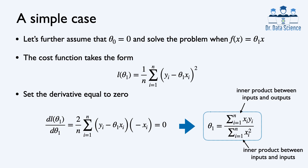Let's make one simplifying assumption: the intercept term theta_0 is always equal to 0. This means the function has only one parameter, theta_1, the slope. If x equals 0, then f(x) equals 0 as well, meaning this is a line through the origin. Revisiting our cost function, inside the parentheses we have y_i minus the predicted values theta_1 times x_i. Since we have only one parameter, we can find the derivative of this function with respect to theta_1 and set that derivative equal to 0 to find the optimal value.